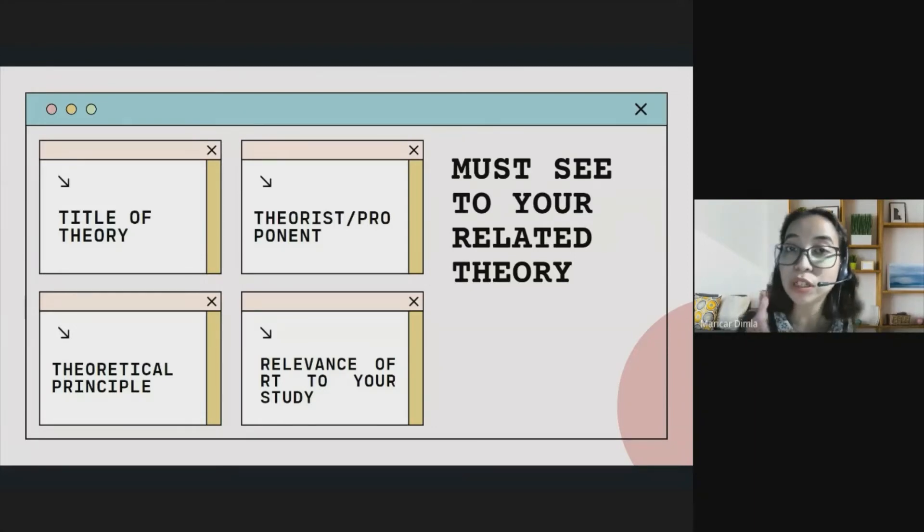Before we forget, you might ask: Ma'am, how many related theories do we need? The answer for that question class is depending on how many variables in your study. Class, variables only, not including the sub-variables. Just your IV and DV. Good for two to three theories. One theory intended for your independent variable and another one for your dependent variable. You are more than lucky if you can find a theory that could justify and connect your IV and DV.